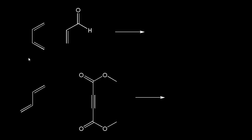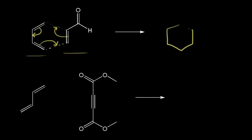Let's get some practice with simple Diels-Alder reactions — we won't worry about stereochemistry in this video. First, you need to recognize the diene and the dienophile. On the left is our diene; on the right is our dienophile. Moving electron density from the diene to the dienophile, we form a bond between these two carbons, then a bond between the next two carbons, giving us our cyclohexene ring. We can draw our product right away: a cyclohexene ring with an aldehyde coming off of that carbon.